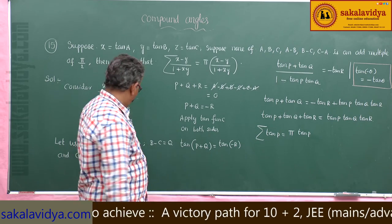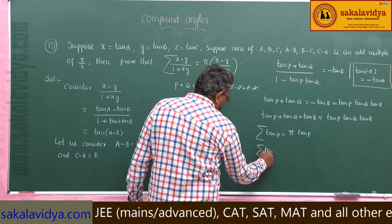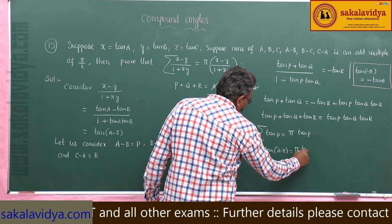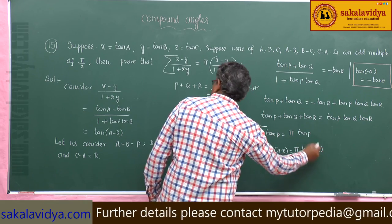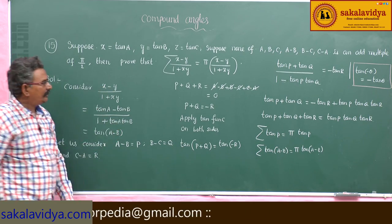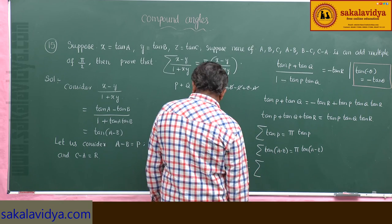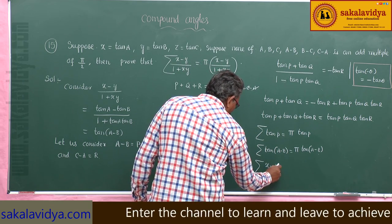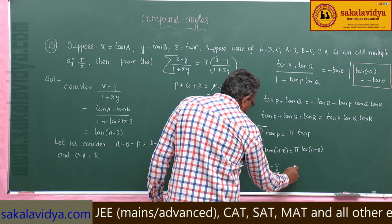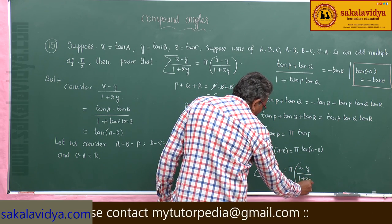Let us replace p with its value. So that is sigma tan of (a minus b) equal to pi of tan of (a minus b). And this tan of (a minus b) is nothing but (x minus y) by (1 plus xy). Therefore, sigma (x minus y) by (1 plus xy) is equal to pi of (x minus y) by (1 plus xy). Hence it is proved.